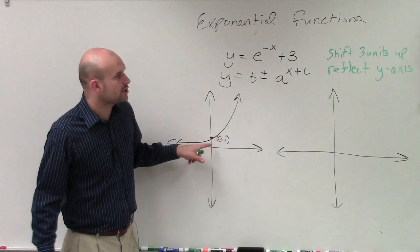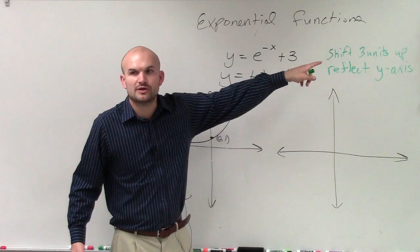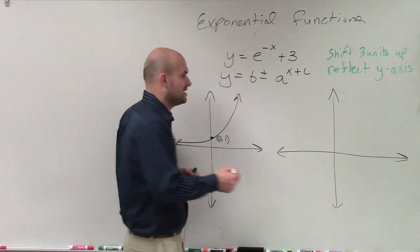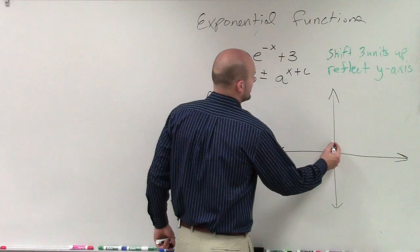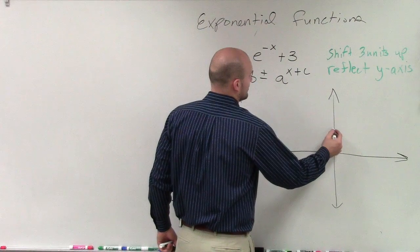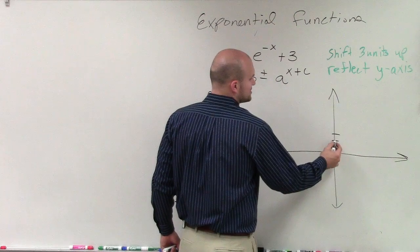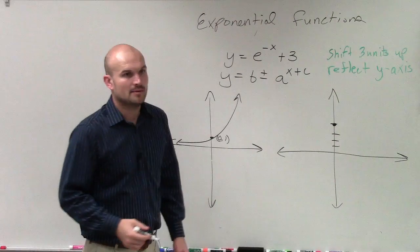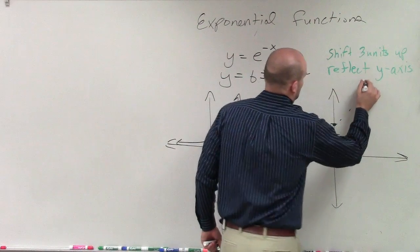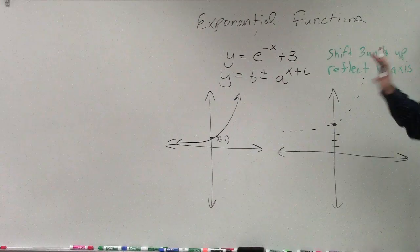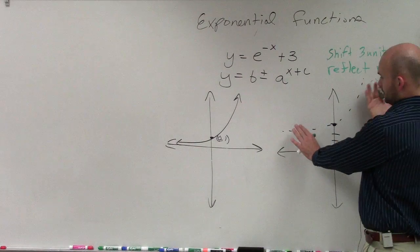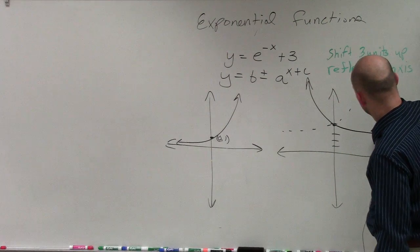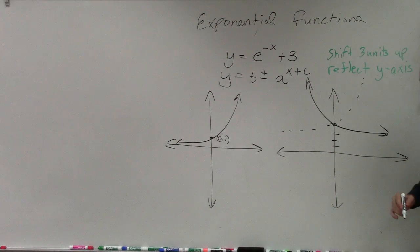So we know that the graph crosses at 0, 1, but now we're going to shift it up 3 units. So if I start at 1 and I shift it up 3, my new y-intercept is going to be 1, 2, 3. Here's the original. Go up 3 units. 1, 2, 3. But now, instead of the graph looking like this, you need to reflect it. So you take the graph, and you reflect it over the y-axis. So now the graph is going to look something like that.